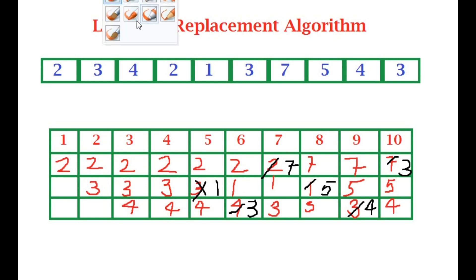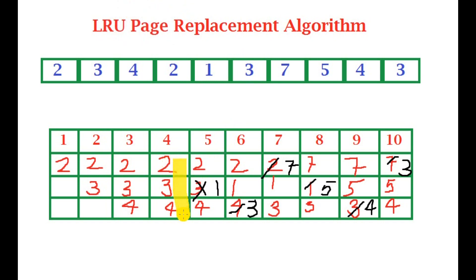Going through the page hits: this was a page hit because two was already in the memory cell when two came in again. All the crossed ones are page faults. So we can see that we have at least one page hit in this situation.